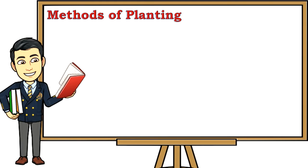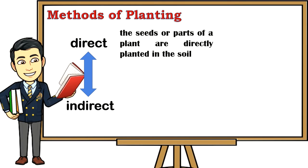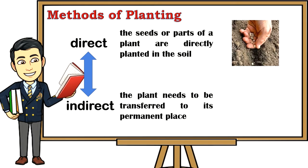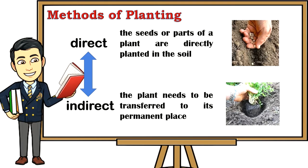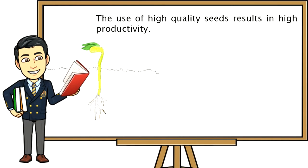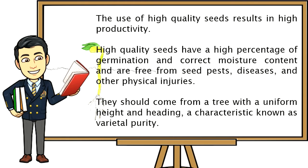Methods of planting: different trees are cultivated in different ways. There are two ways of planting — direct and indirect. Direct planting is where seeds or parts of a plant are directly planted in the soil where they will germinate and grow into full-grown trees. In indirect planting, the plant needs to be transferred to its permanent place. The use of high-quality seeds results in high productivity; they have a high percentage of germination, correct moisture content, and are free from pests and diseases.